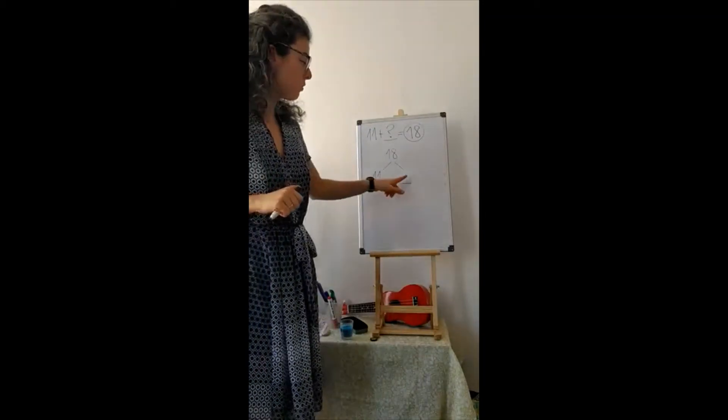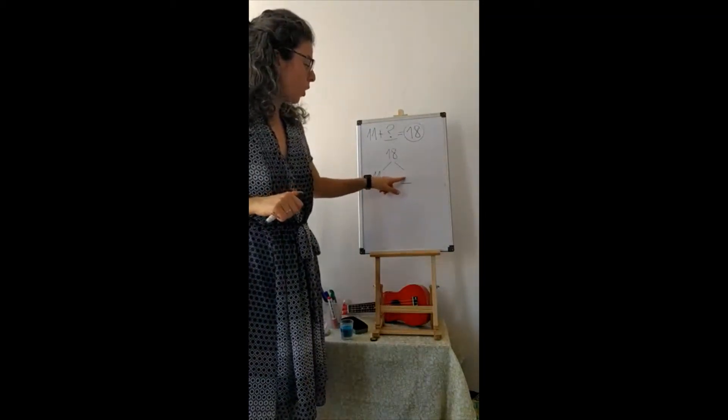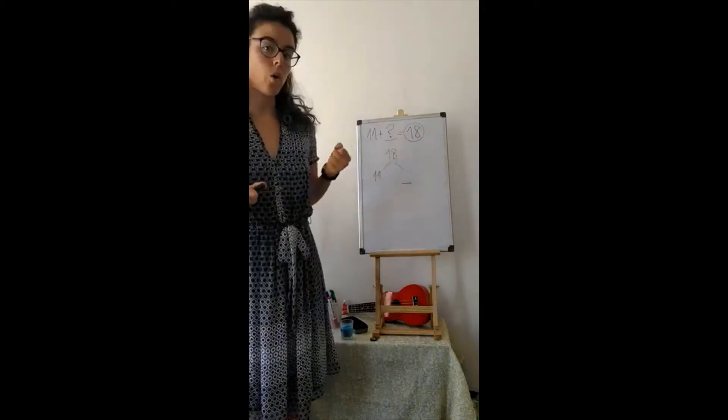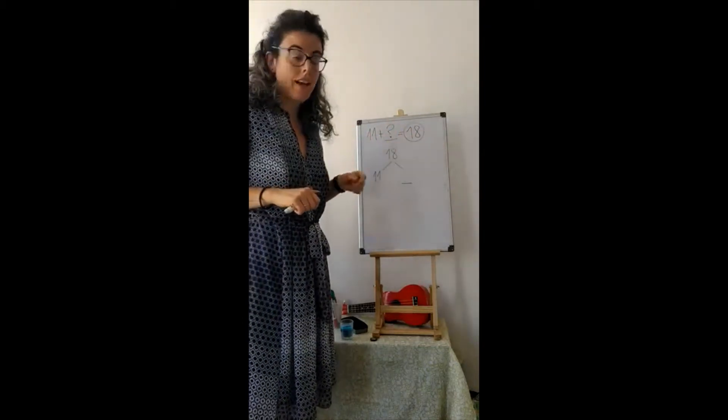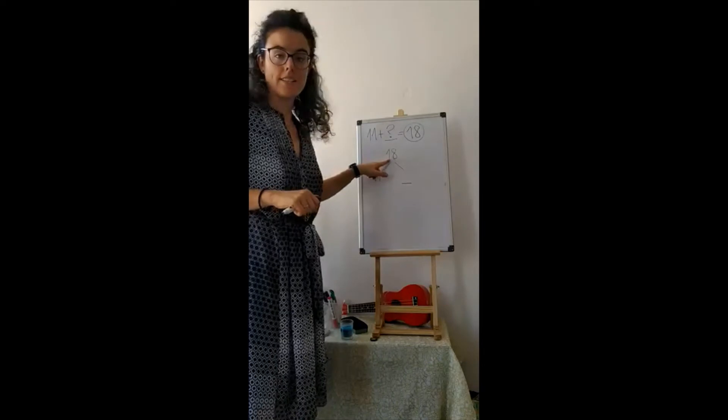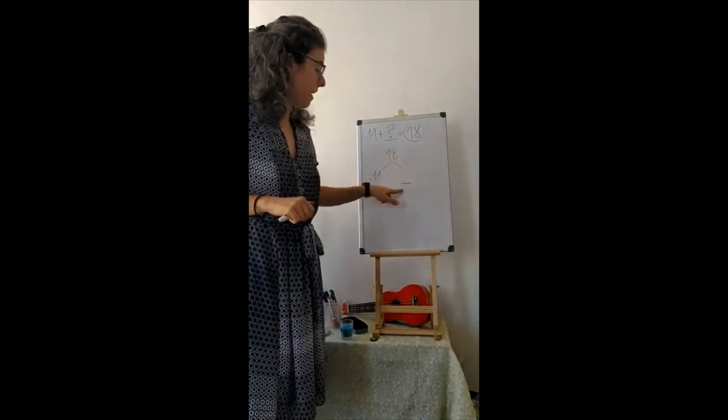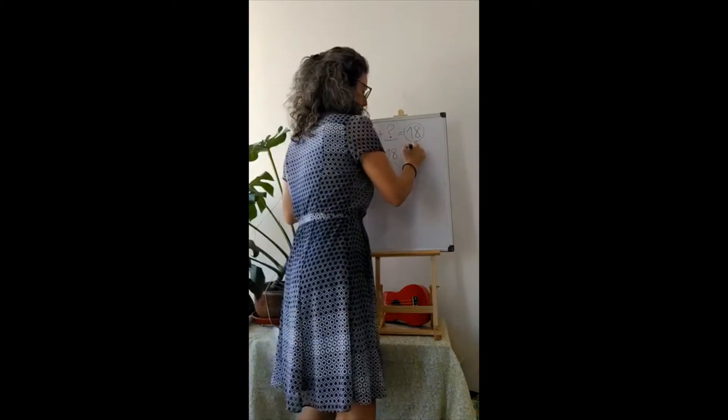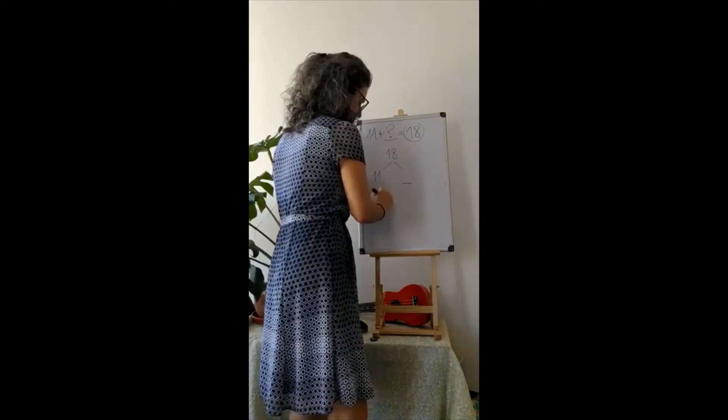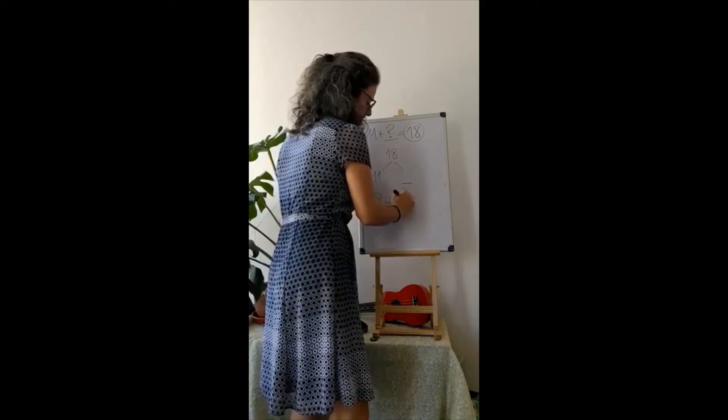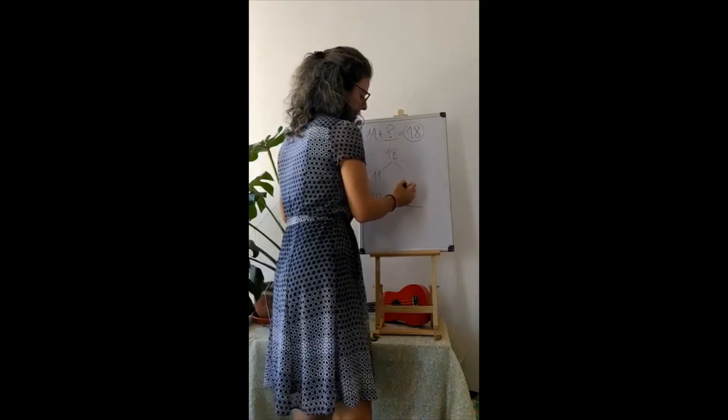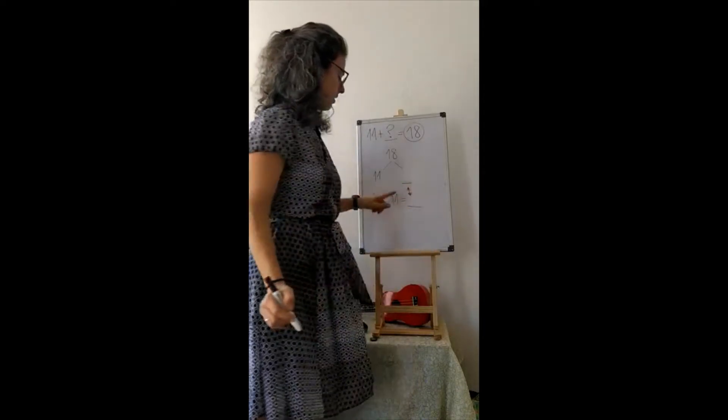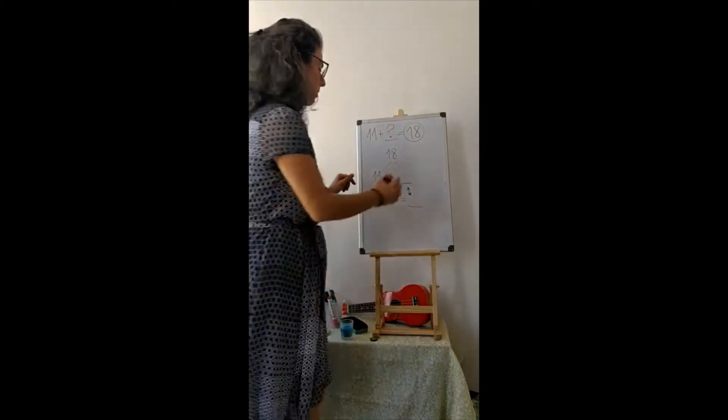So we know there are two groups that we put together to make eighteen. So if we want to find out this group, we can take away, or subtract, eleven from eighteen. And what's left is this group. So we can do eighteen minus eleven is equal to, and this number is going to be the same as this number.